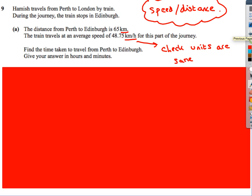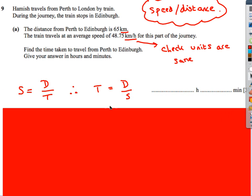The very last question, let's look at a speed, distance, time question. These can be tricky. It depends on the question, really. The distance from Perth to Edinburgh is 65 kilometers. The train travels at the average speed 48.75 kilometers per hour. We've got kilometers and kilometers per hour, so we don't need to do anything with the units. Find the time taken from Perth to Edinburgh. Whenever you've got a speed, distance, time question, just write out: speed equals distance over time.